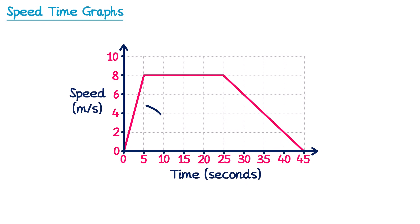In the first section of the graph, the runner's speed starts at 0 and then goes up to 8 metres per second. If your speed is changing, we say there's an acceleration. So in this section the runner accelerated from 0 m/s to 8 m/s — in this part they were accelerating.